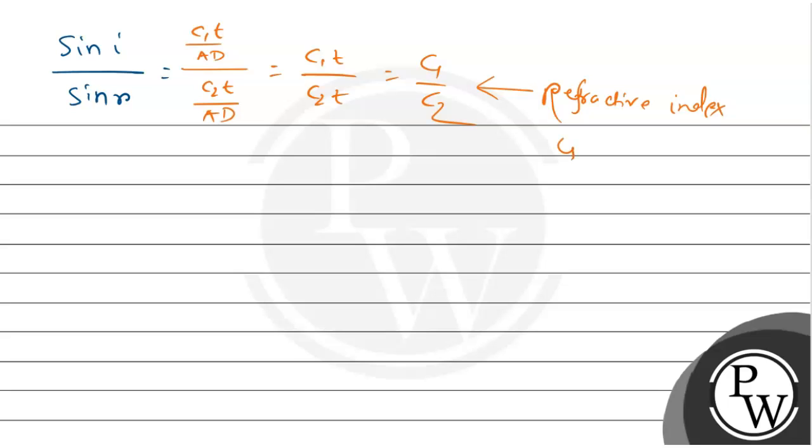Actually, this refractive index is for medium 1 with respect to medium 2. So here you can see that C1 by C2 is N2 by N1 because it is the refractive index of medium 2 with respect to medium 1. This is the equation of Snell's law.